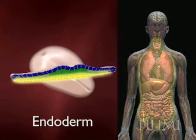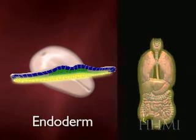And the endoderm gives rise to the whole gut tube. There you see the lung, the liver, the intestine.